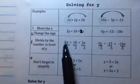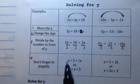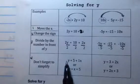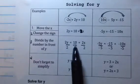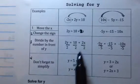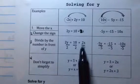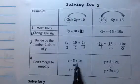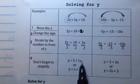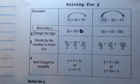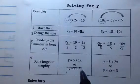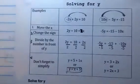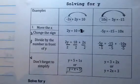So 2 divided by 2 just reduces to 1, which is why you just see a Y there. 10 divided by 2 is 5, and then 2 divided by 2 is 1X, or we just write it like this: Y equals X plus 5.